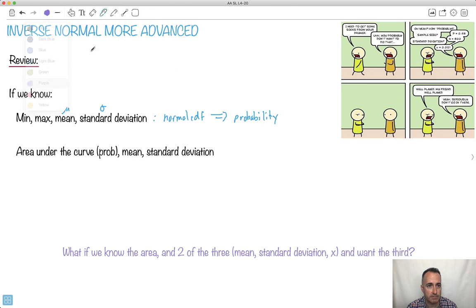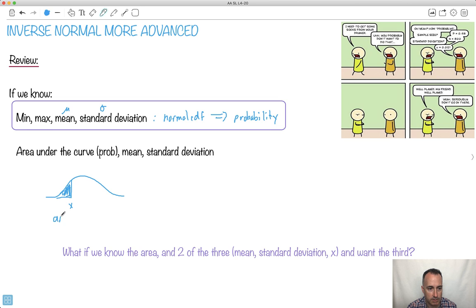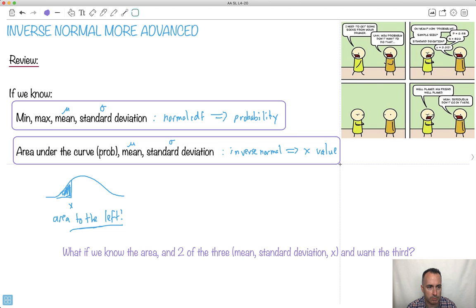Okay, so that's been one thing. Now, if we knew the area under the curve, and by the way remember this only works for areas to the left, and if we knew the mean and the standard deviation, then we can do what's called inverse norm. And that tells us the x value. So now we've got those two things. I'm just trying to remind you when we use them, because otherwise it gets a bit confusing. So this is the goal: if you know these, then you do those.